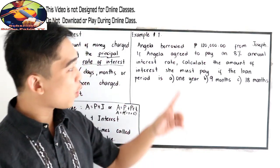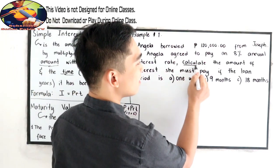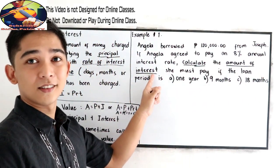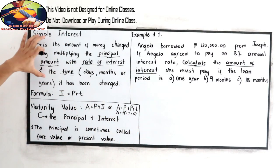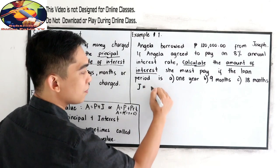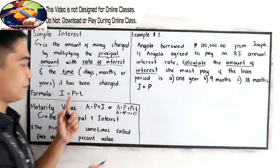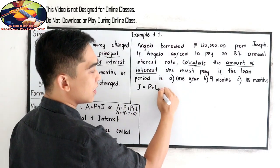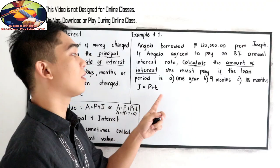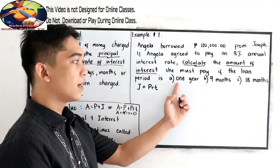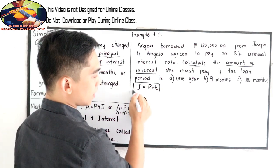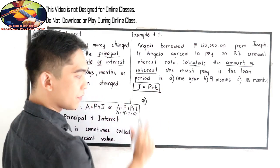So we're going to calculate the amount of interest. So we're going to use our formula, interest is equal to P, R, T. Principal, principal amount, times the rate, times time. So let's start with letter A, one year. Let us go back to the formula. One year. I will write one year.